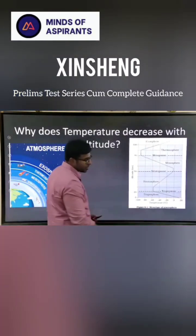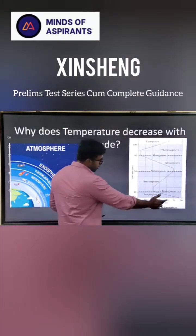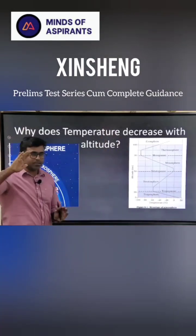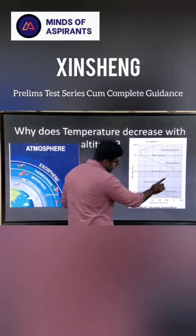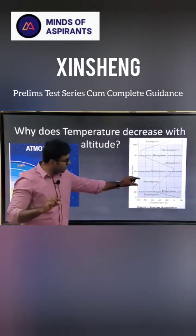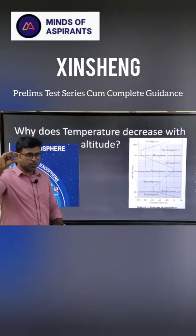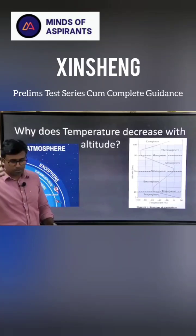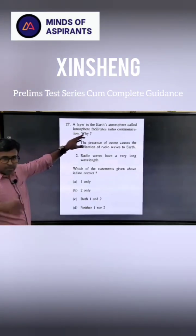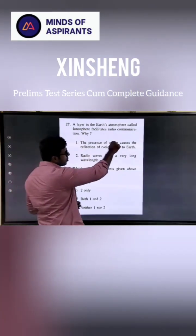We saw the atmospheric layers: troposphere, stratosphere, mesosphere, and thermosphere. Temperature decreases as you go up, but then why does it increase again? It is because of the ozone layer. Above the mesosphere is the ionosphere.